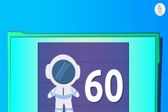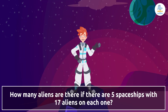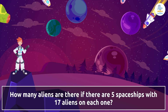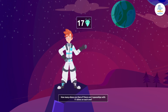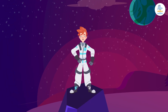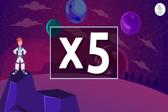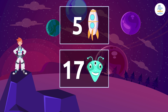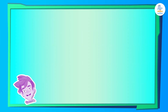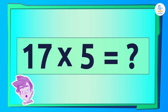Easy, right? How many aliens are there if there are 5 spaceships with 17 aliens on each one? Let's learn how to quickly multiply 5 by an odd number. We know that there are 5 ships and 17 aliens are on each one, so we have to multiply 17 times 5. Let's get into it!